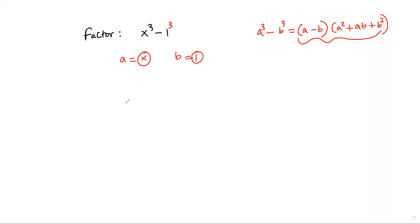Okay, now let's do it. First, a - b, that means x - 1. a² is x², positive ab is x times 1, positive b² is 1². So (x - 1) times (x² + x + 1).